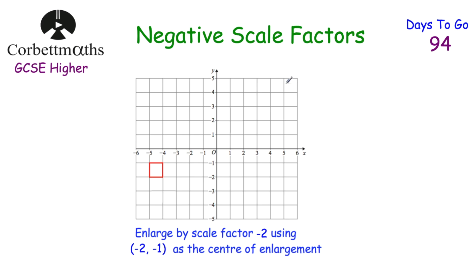Now let's look at negative scale factors. When we enlarge using a negative scale factor, we go the opposite direction. We have a square to enlarge using scale factor -2 with centre of enlargement (-2, -1). Plot the centre of enlargement. For the first point, we go 2 to the left from the centre — doubling and going the opposite way means going 4 to the right, placing the new point there.